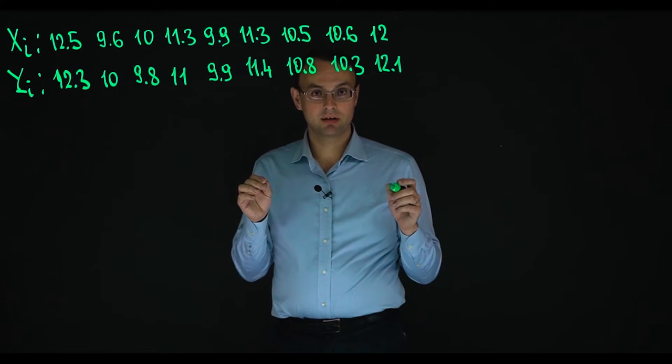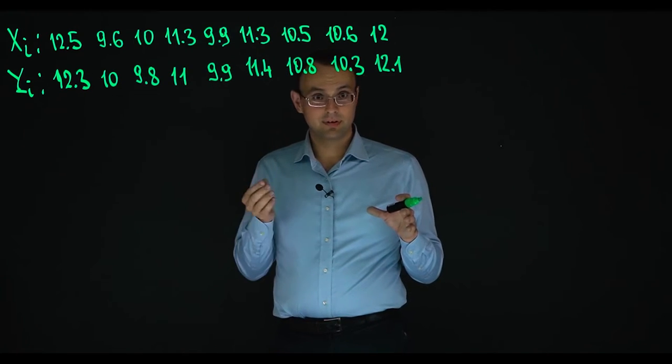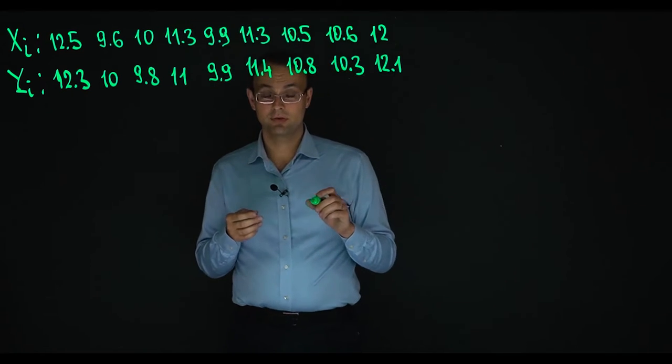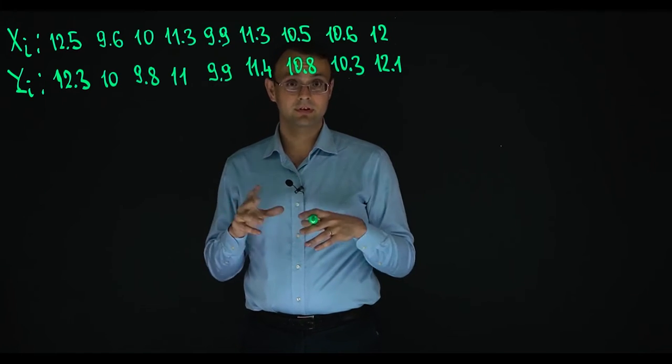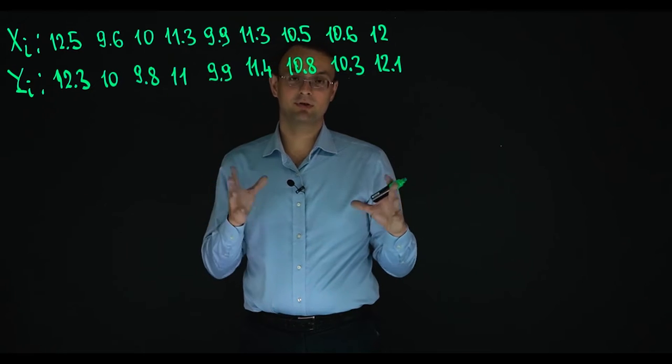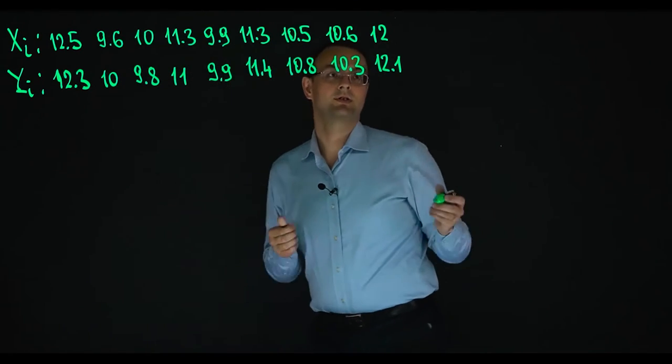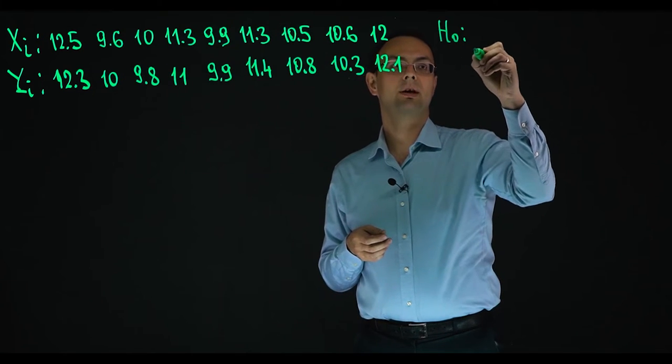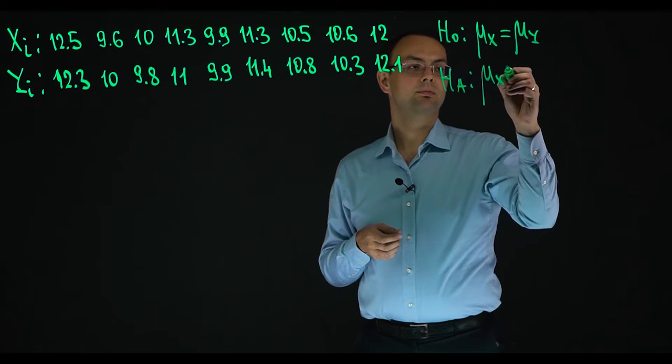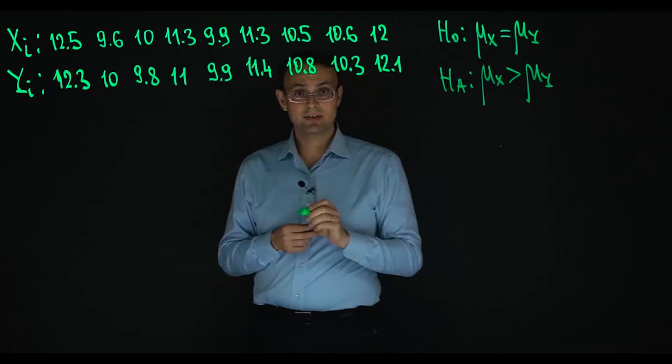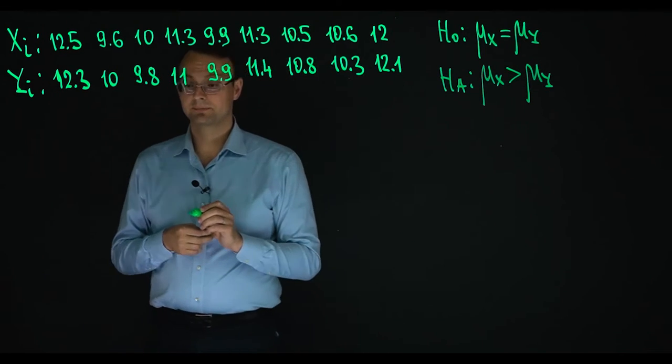So let us solve the same example without this additional assumption that our samples follow normal distribution. So the example is the same. These are times in seconds of nine 100 meter runners before and after completing a training program. And so the question is the same. Is this program effective in reducing average time? We are going to test the same pair of hypotheses that mu x is equal to mu y against an alternative that mu x is more than mu y but without an assumption on the normality. So we are going to use the Wilcoxon signed rank test.